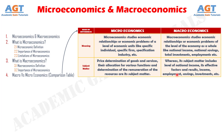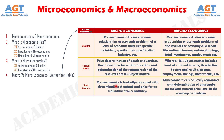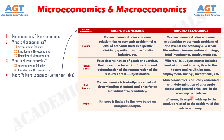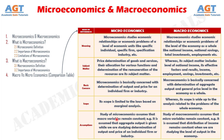Number three: Microeconomics is basically concerned with determination of output and price for an individual firm or industry. Whereas macroeconomics is basically concerned with determination of aggregate output and general price level in the economy as a whole. Number four: The scope of microeconomics is limited to the laws based on marginal analysis. Whereas the scope of macroeconomics is wide, up to the analysis related to the problems of the whole economy. Number five: The study of microeconomics assumes that macro variables remain constant — for example, it is assumed that aggregate output is given while studying determination of output and price of an individual firm or industry. Whereas the study of macroeconomics assumes that micro variables remain constant — for example, it is assumed that distribution of income remains constant when studying the level of output in the economy.